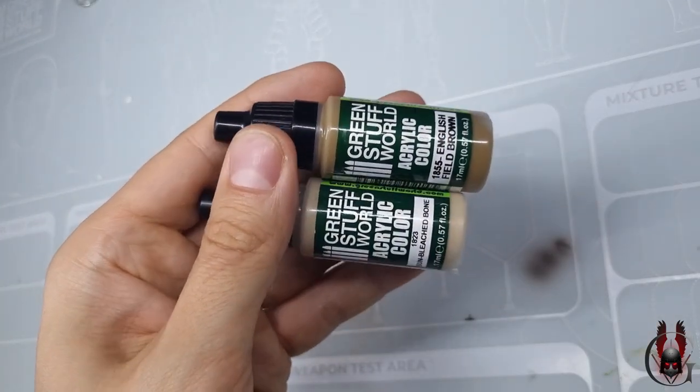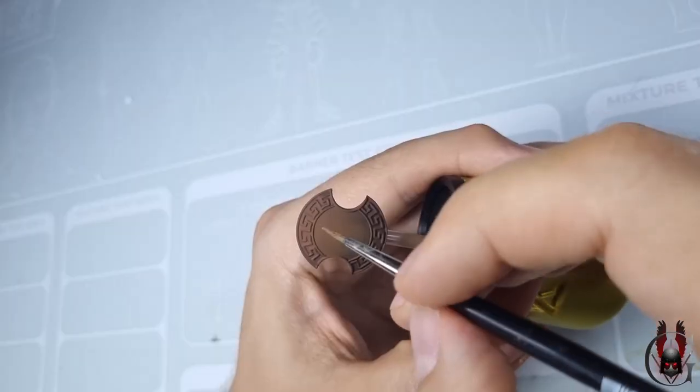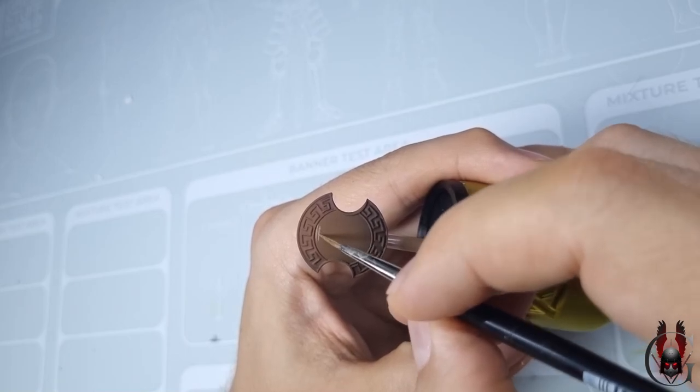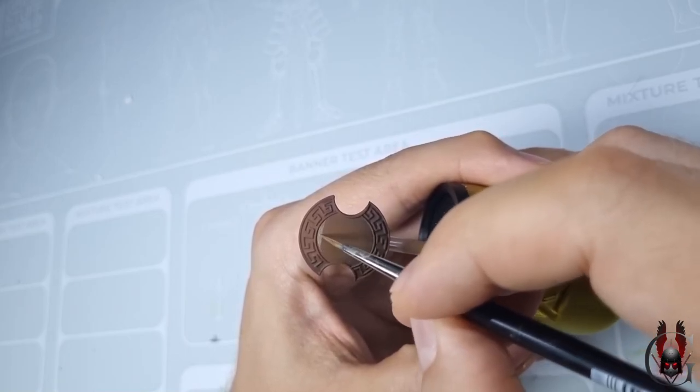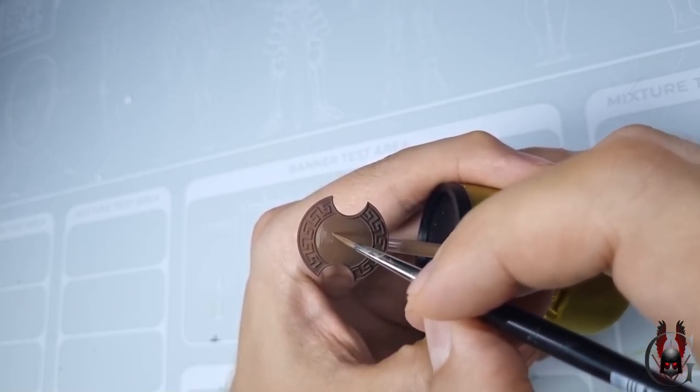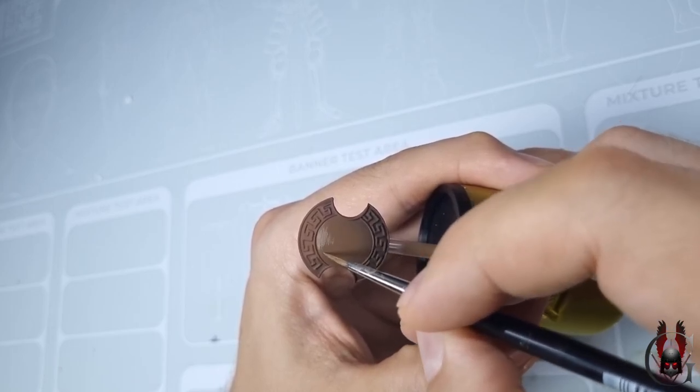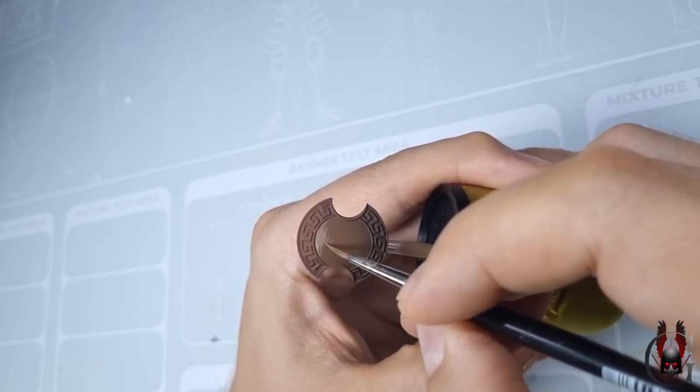Now I start the brushwork. With the mix of English Field Brown and Bleach Bone, I'm starting highlighting the shield focusing on the upper part of the shield. Top edges, but also on the ruins at the bottom where the zenital highlight from the previous step hit.